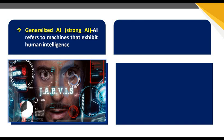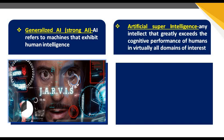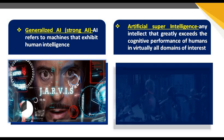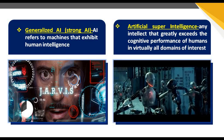Generalized AI is what we have seen in Hollywood movies — like Jarvis. Jarvis was a robot properly trained with commands, trained as a Generalized AI. When we talk about Artificial Super Intelligence, it means intellectual properties that greatly exceed the cognitive performance of humans in virtually all domains of interest. We can compare Generalized AI and Artificial Super Intelligence across all segments.